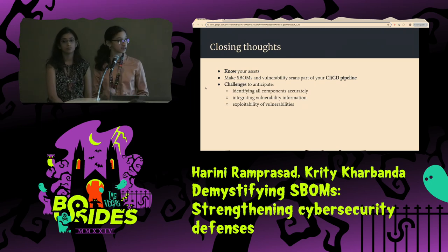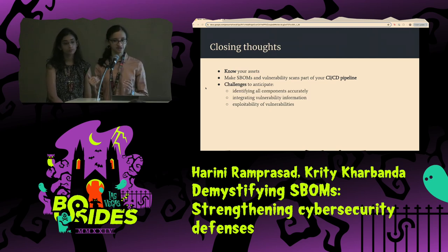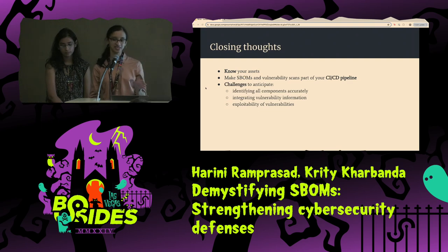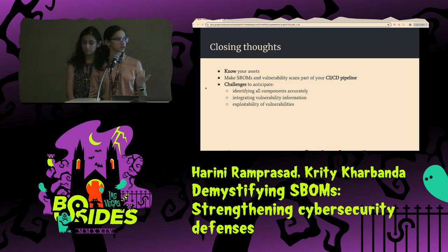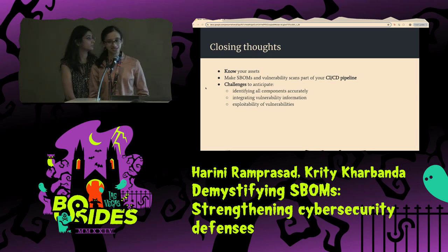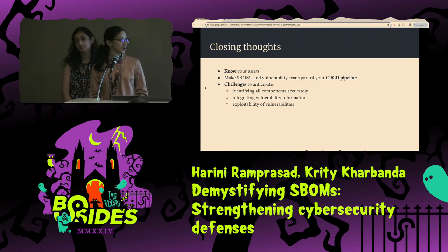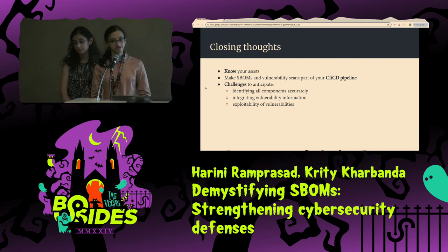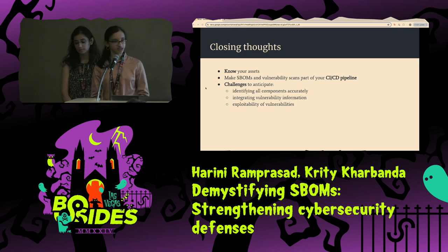The second challenge is integrating vulnerability information. Once a product is released and in production, the SBOM with component information can be considered fairly stable, but the vulnerability information about the components and dependencies is dynamic — as new risks are discovered, you have to make sure you're updating that vulnerability information and tracking it accordingly. Third is exploitability of the vulnerabilities. When you have a huge list of vulnerabilities to fix, how do you go about prioritizing? Exploitability becomes a big factor, and tracking vulnerability information along with exploitability tags would be really helpful when going about fixing them.